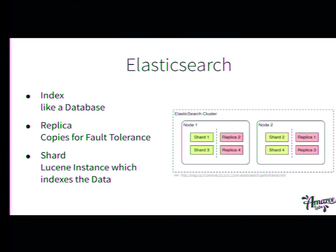Elasticsearch then says: okay, I have just one server, and it creates one index and tries to create four replicas, but it says I'm just one server — I can't do whatever you told me. It will then just show the cluster state red, unless you drop in four more servers, and then it will allocate the replicas. Then it will say, okay, I'm green again.